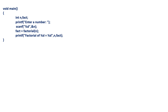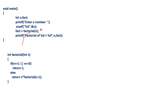Now let us see how we got this output. We assume n value is 4. Then factorial function is called by passing value 4. A copy of factorial function is created and n value becomes 4. The condition 4 == 1 fails because 4 is not equal to 1 and not equal to 0, so we come to the else part. In the else part, it calls factorial(n-1), which is factorial(3).